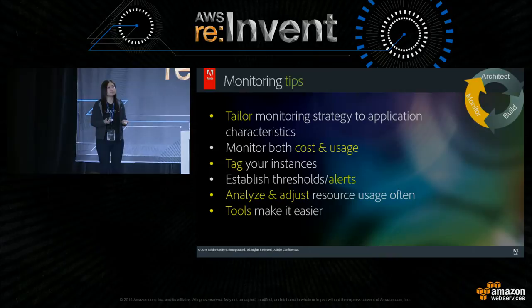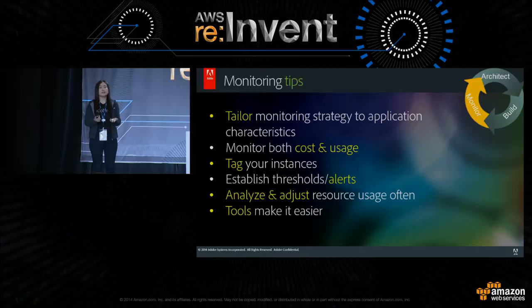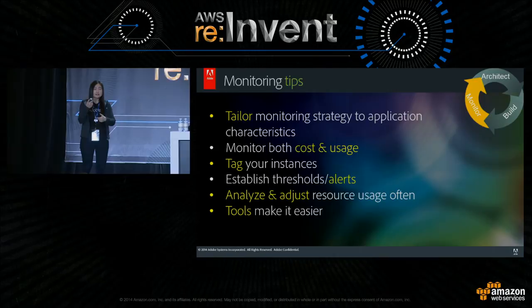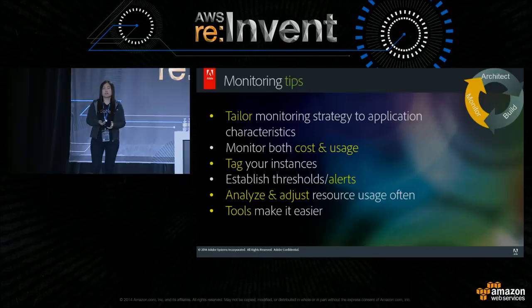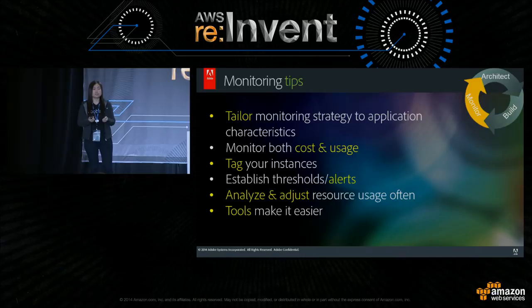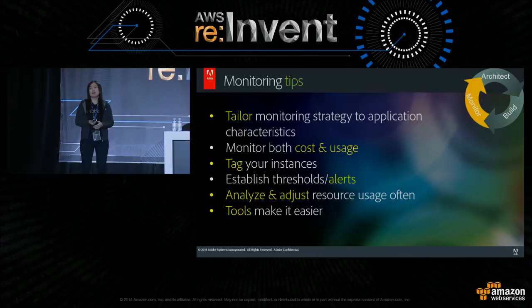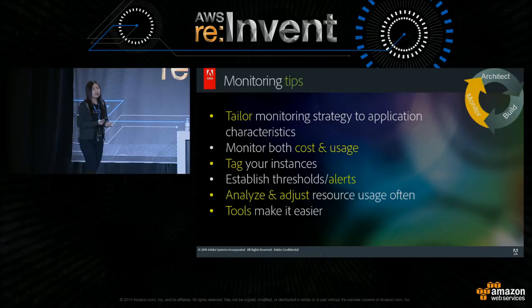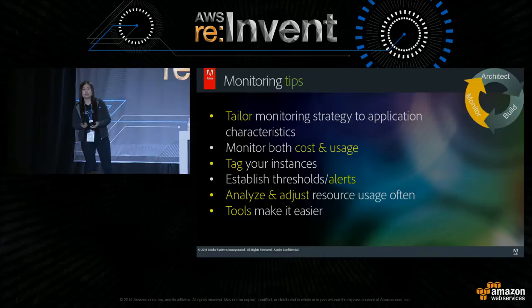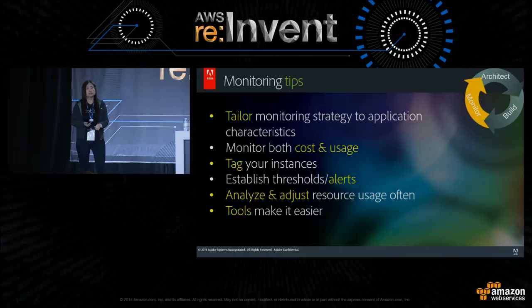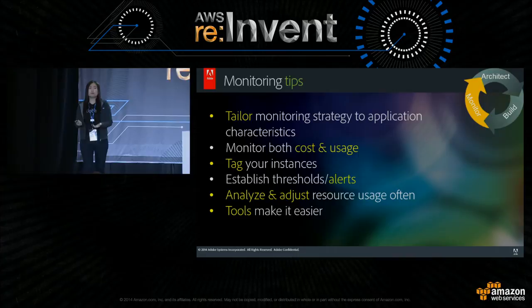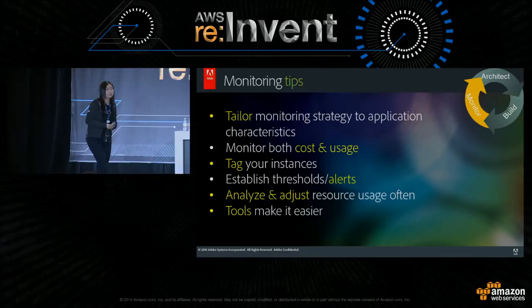Now that you've set up your infrastructure, the next thing to look at is monitoring. Monitoring is really important because it helps you validate your decisions and gives you data points on how to iterate the architecting and running steps of the cycle. Your monitoring strategy should align with your application characteristics — identify the key metrics relevant to your application. Don't just monitor cost; also look at how your infrastructure is utilized, because utilization drives cost. Tag your instances with environment, owner, and cost center to help slice and dice your reporting data. Establish actionable alerts that tell you when there's a change in cost or usage so you can take action appropriately.